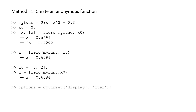If you would like to see the value of the root estimate and function at every iteration, you can use the optimset command in the following manner: options = optimset('display', 'iter'). Then include options as the third argument in the fzero function.